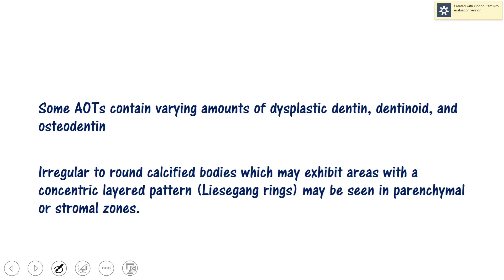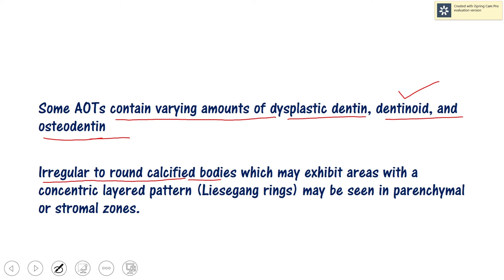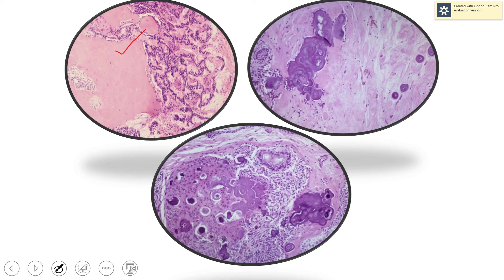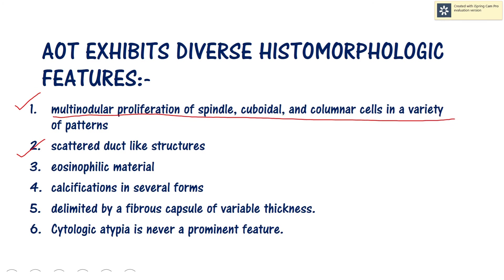Some AOTs contain varying amounts of dysplastic dentine, dentinoid, and osteodentine — uncalcified dentinal matrix may be present. There may also be presence of calcified masses; irregular to round calcified bodies may be present in a concentric layered pattern, called Liesegang calcification. This dentinoid-like material and Liesegang calcification can be appreciated in the corresponding diagram.